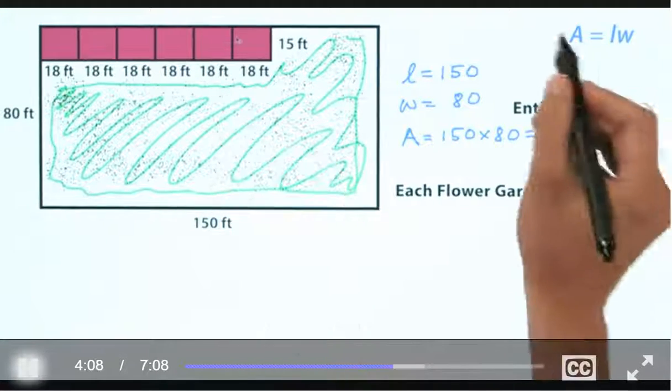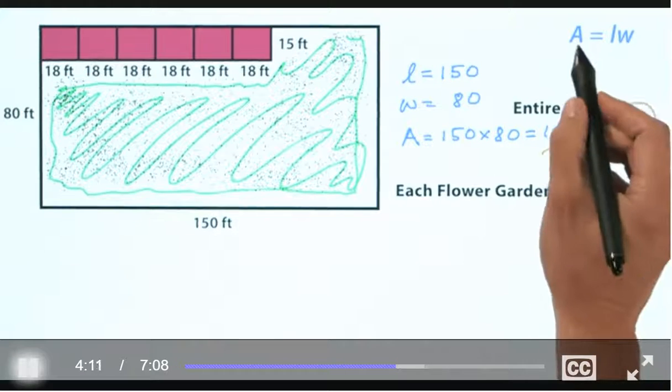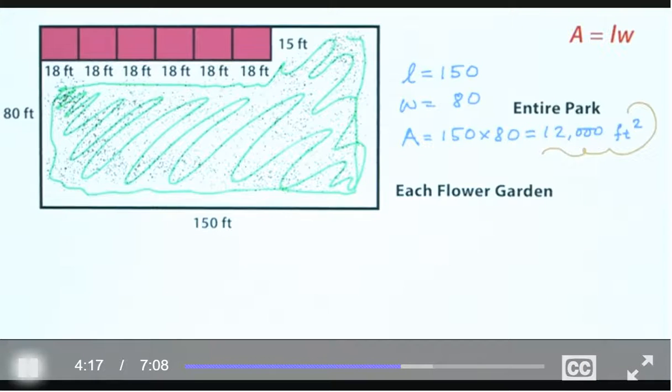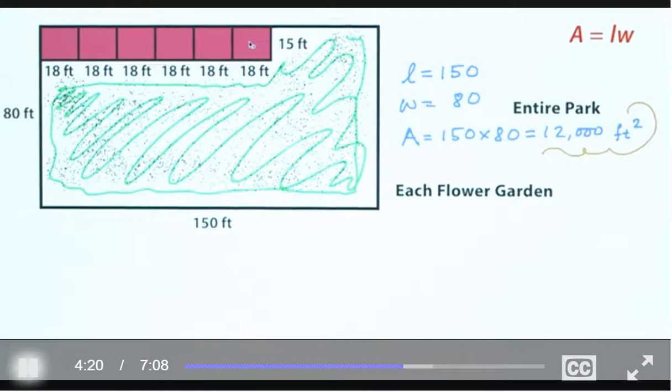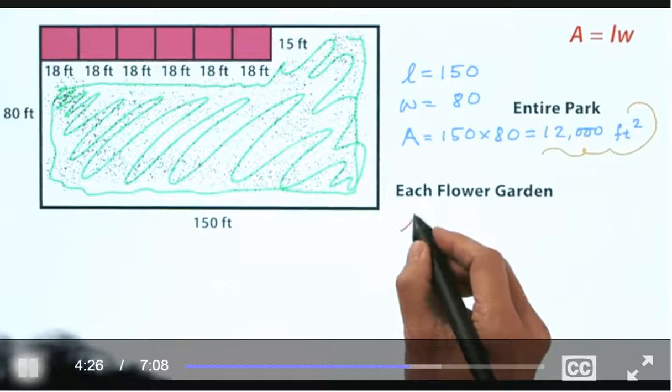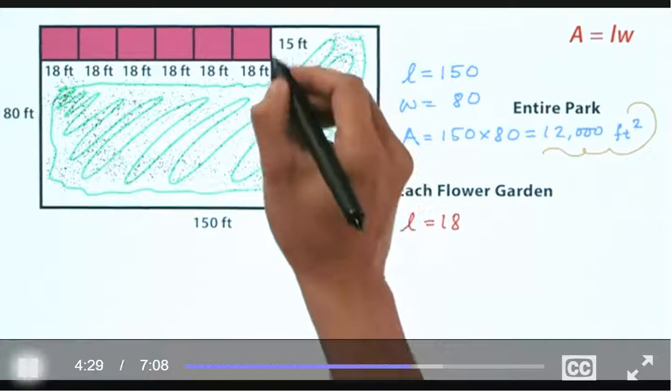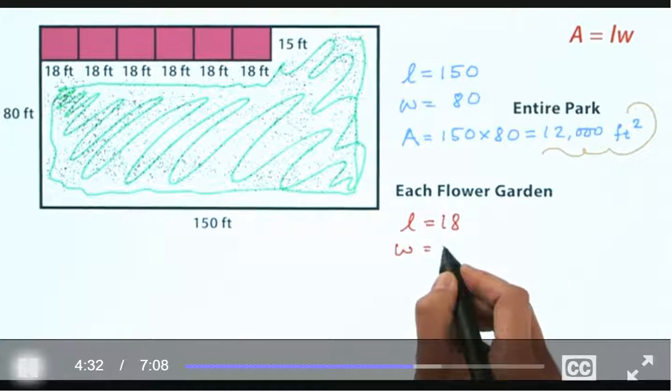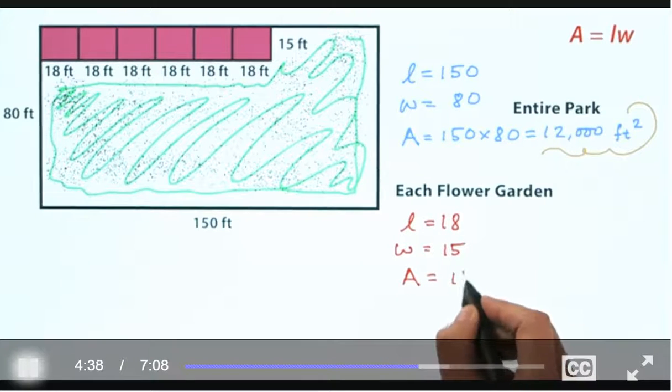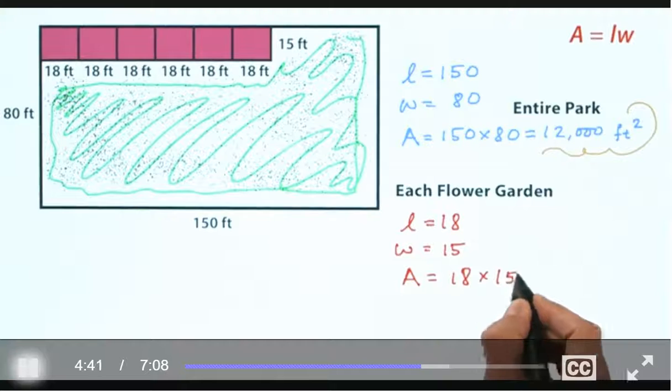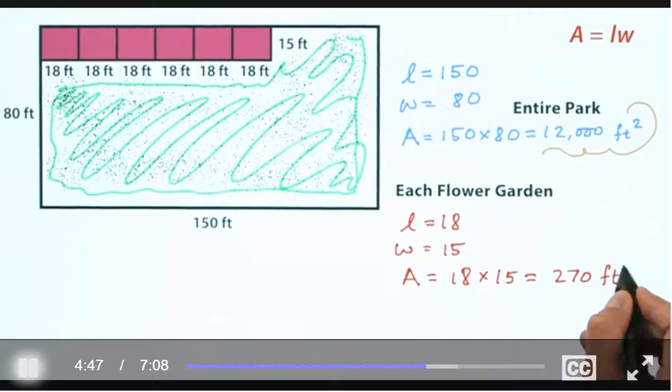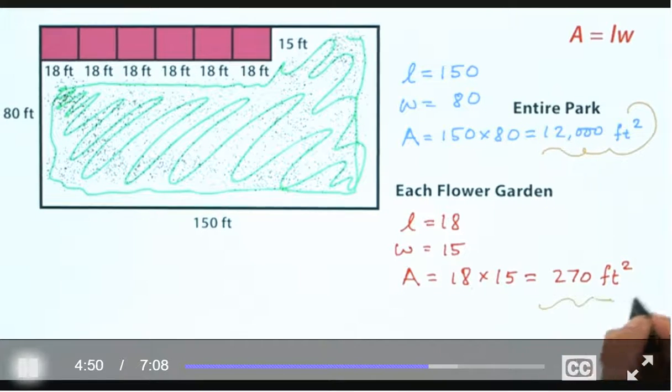So each flower garden. Well, that's a little teeny rectangle, so we use the exact same formula. Of course, when we use the formula, we have to use red because we're looking at these flower gardens. Okay, so now how do we go about this? Well, the length here, you can see right here, is 18. And the width is 15. And so, using the equation, we see that area equals length times width, or in this case, 18 times 15, which is 270. And these are units feet squared again.